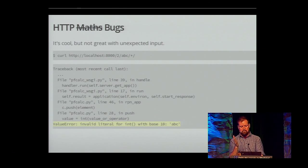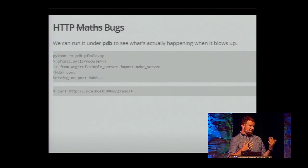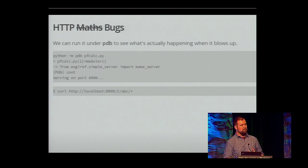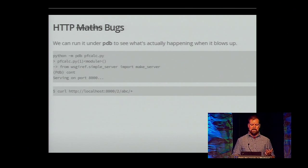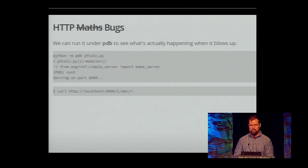If I want to debug this program using PDB, the first step is simply to run it under PDB. Again, it stops before it does anything — it's getting ready to import the WSGI server. If I say continue, it'll tell me it's ready to serve on port 8000. Now I can use curl to make my request and figure out what's going on. We haven't put any set_trace in here — we're just running it under PDB.